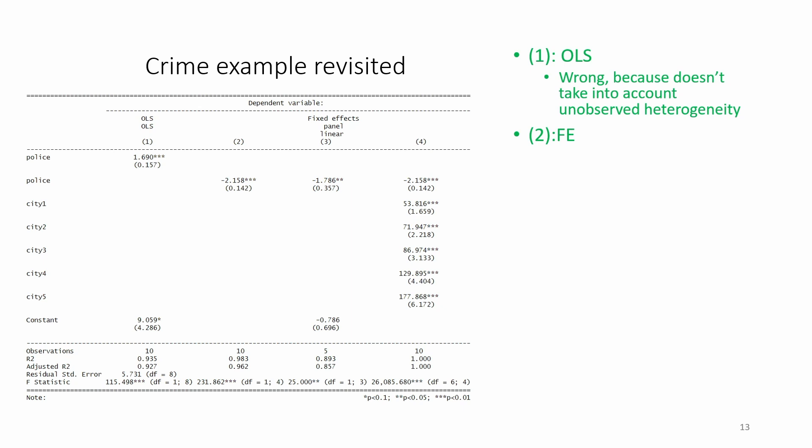Model 2 refers to fixed effects regression, also known as within regression. Here the data is transformed to remove the individual specific average. There is no constant term reported in the output of model 2. The coefficient on police is negative, minus 2.158, in line with expectations.